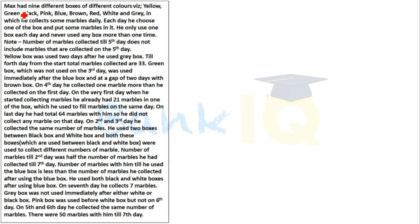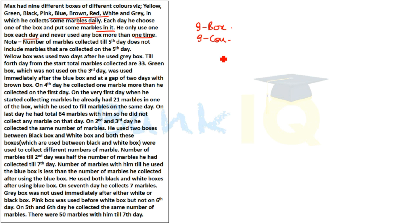The question says: Max had 9 different boxes of different colors in which he collects some marbles daily. Each day he chooses one box and puts some marbles in it. He only used one box each day and never used any box more than once. So Max has a total of 9 boxes of different colors, and he uses them daily to collect marbles — one box per day, never repeating. This means he uses boxes for 9 days total.